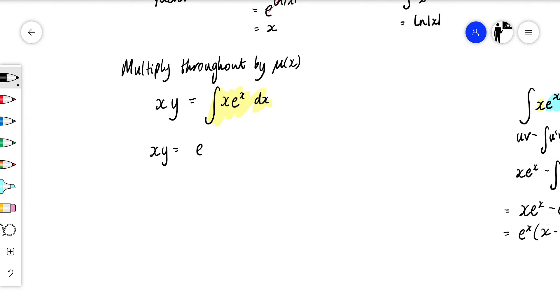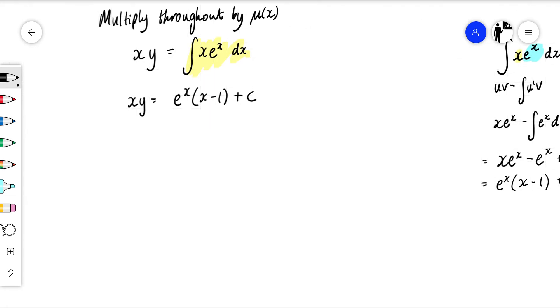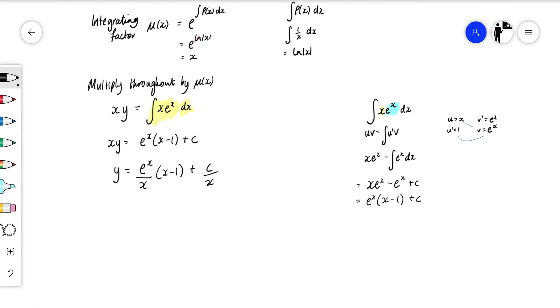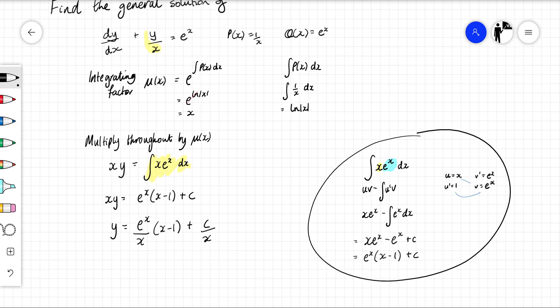x y is equal to e to the x times x minus 1 plus c. Then we want to make y the subject, so it's going to become y equals e to the x over x times x minus 1 plus c over x. Okay, so this was more involved this time in that we just had to do a bit more work when we were integrating. Thank you very much.